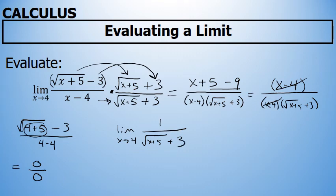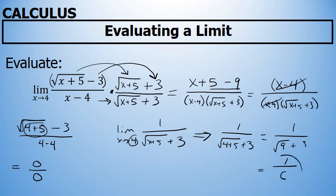At this point, I'll again try direct substitution. I'll substitute 4 for x, and what happens now is that I'm left with 1 over the square root of 4 plus 5 plus 3, which is 1 over the square root of 9 plus 3, which is equal to 1 over 3 plus 3, or 6.